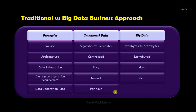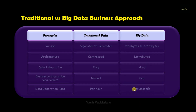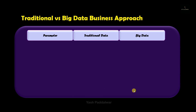The next parameter is the data generation rate. Traditionally, the data was not getting generated in large amounts, hence the data generation rate was hardly per hour. But in the big data approach, the data generation rate is measured in seconds, as we have discussed in previous videos with different real-life examples of big data generation.